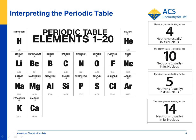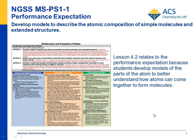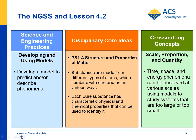If you're in an NGSS state, there's a performance expectation, MS-PS1-1, which says: 'Develop models to describe the atomic composition of simple molecules and extended structures.' Although the NGSS middle school standards don't specifically include content on parts of the atom, the periodic table, or covalent and ionic bonding — which are covered in Chapter 4 — your state or district may include some aspects of these concepts to help students develop a deeper understanding of the atomic composition of molecules. So if you want to use the periodic table to eventually help kids describe the atomic composition of molecules, you could try elements of this lesson.